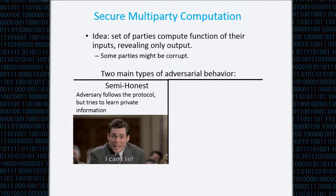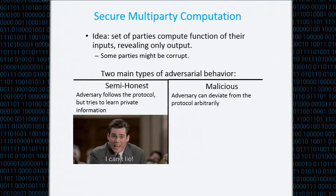The corrupt parties might also collude between themselves. The second type of corruption is malicious corruption, in which we basically don't assume anything about the behavior of the corrupt parties, and they might deviate from the protocol arbitrarily.